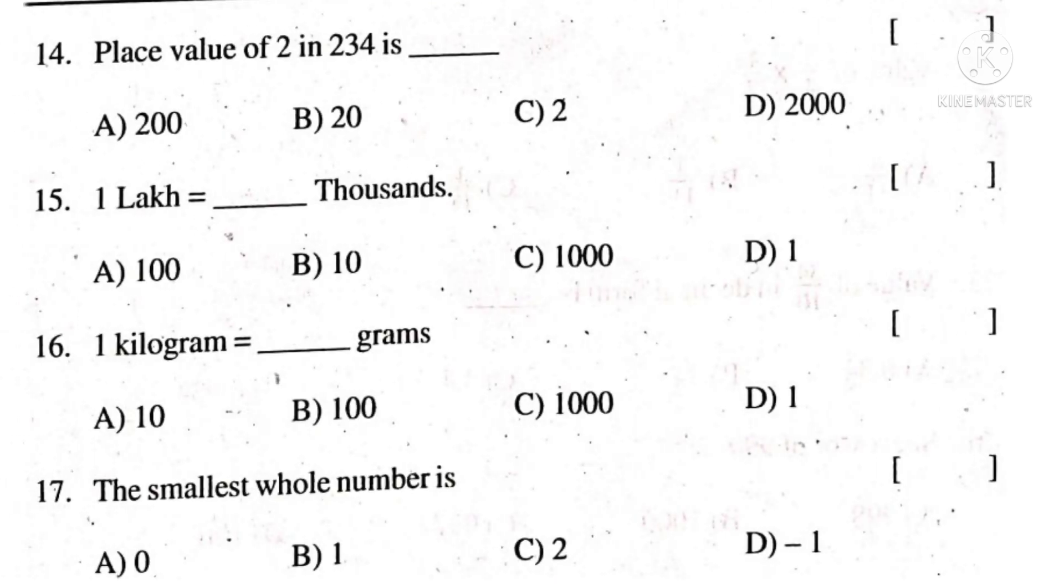Part B starts from the 14th question. Place value of 2 in 234 is - write the place values: units, tens, and hundreds. 2 is in hundreds place, so 2 into 100, that is equal to 200. The correct choice is A.